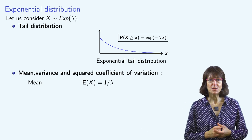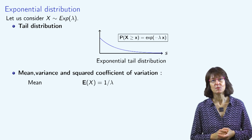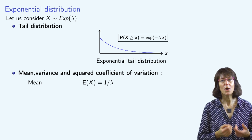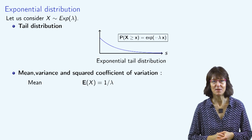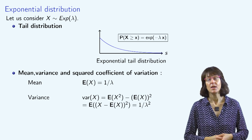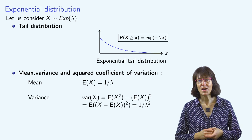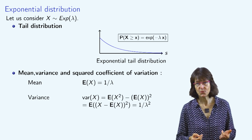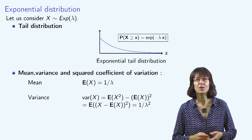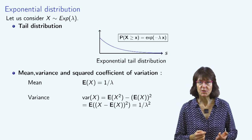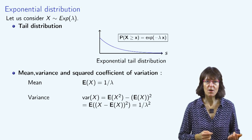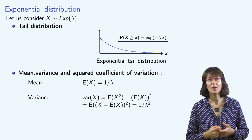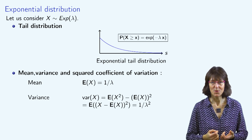It can be shown that the expected value, or mean value, of x equals 1 divided by lambda. It can also be proven that the variance of x, defined as the difference between the expected value of x squared and the square of the mean value of x, equals 1 divided by lambda squared.